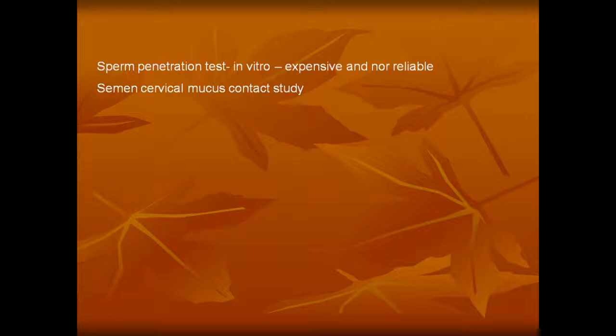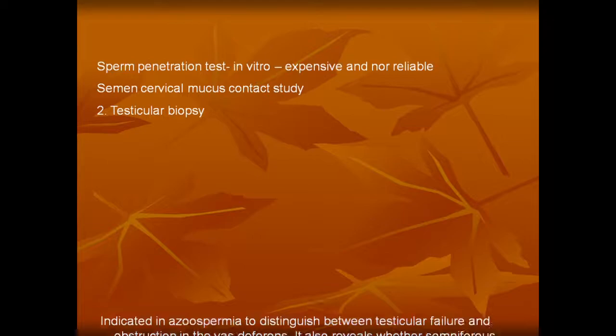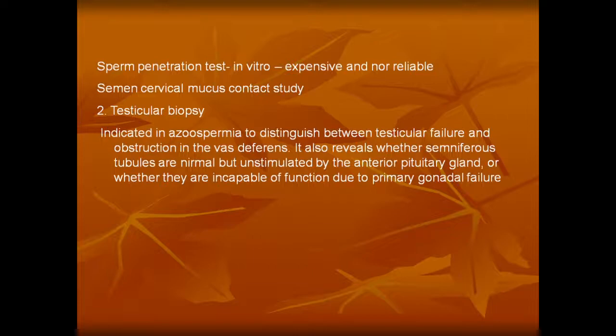The sperm penetration test is done in vitro; it is expensive and not reliable. Second is testicular biopsy, indicated in cases of azoospermia to distinguish between testicular failure and obstruction. It also reveals whether the seminiferous tubules are normal but unstimulated by the pituitary gland or whether they are incapable of function due to primary gonadal failure.